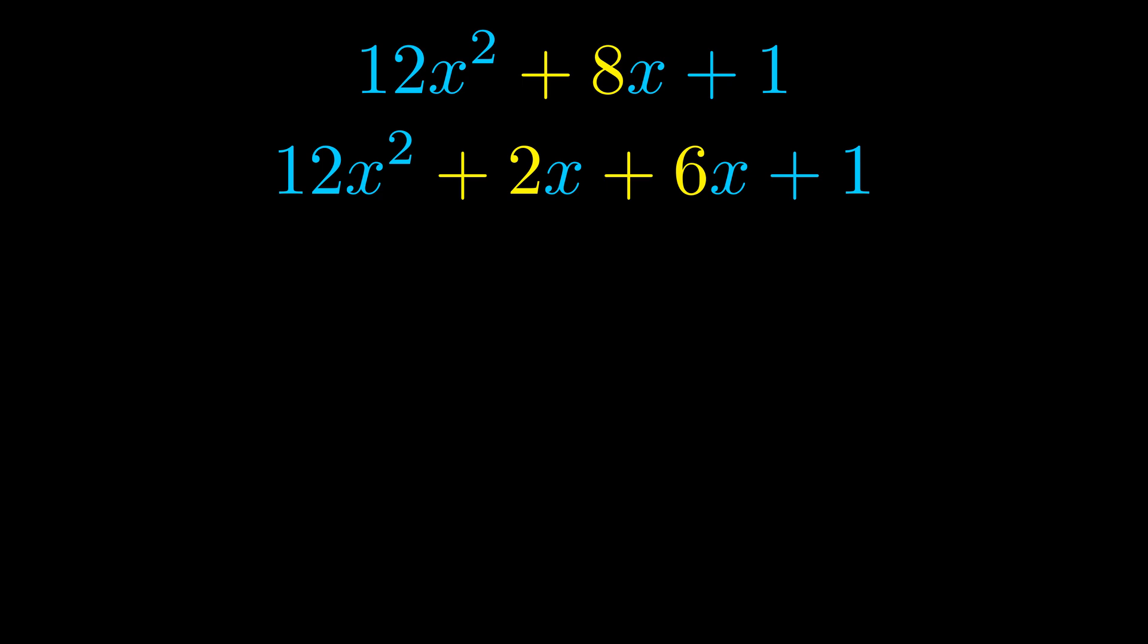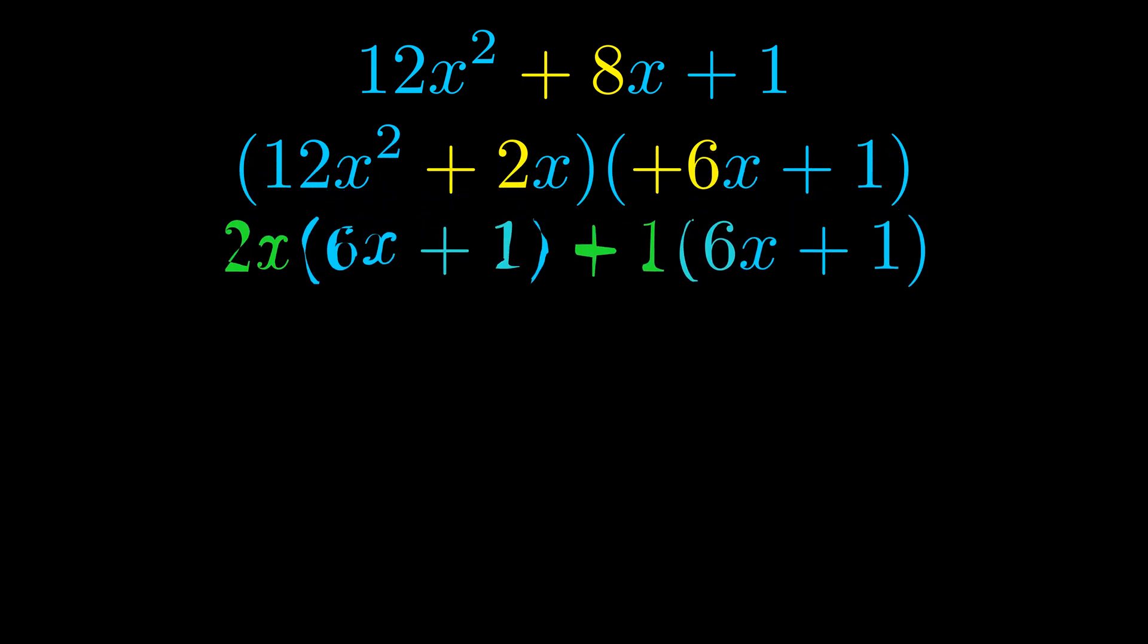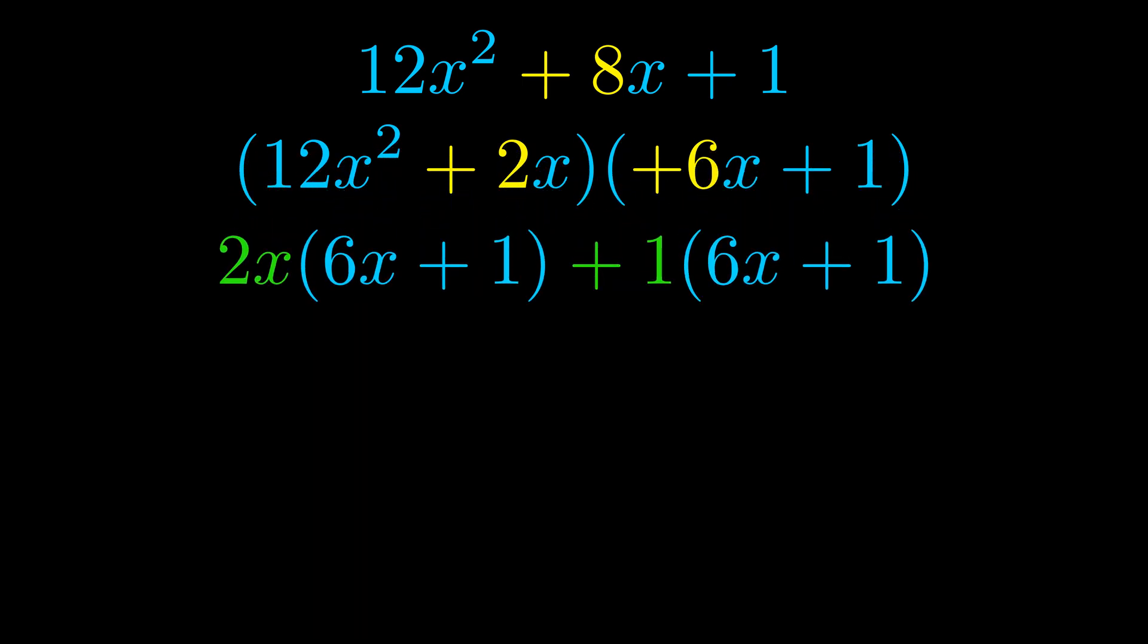Once we've done this we go ahead and put parentheses around the first term and the last term. And we do that so that we can take the greatest common factor out of both terms. We can see the greatest common factor is now outside in green.